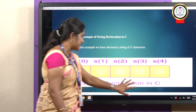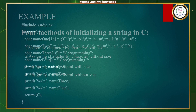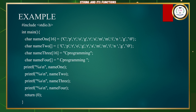There are four methods for initializing strings in an array: assigning character by character with size, assigning character by character without size, assigning string literals with size, and assigning string literals without size.